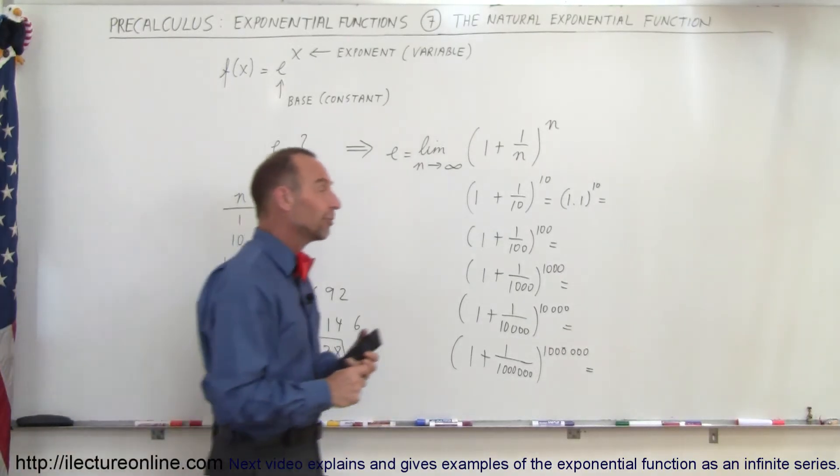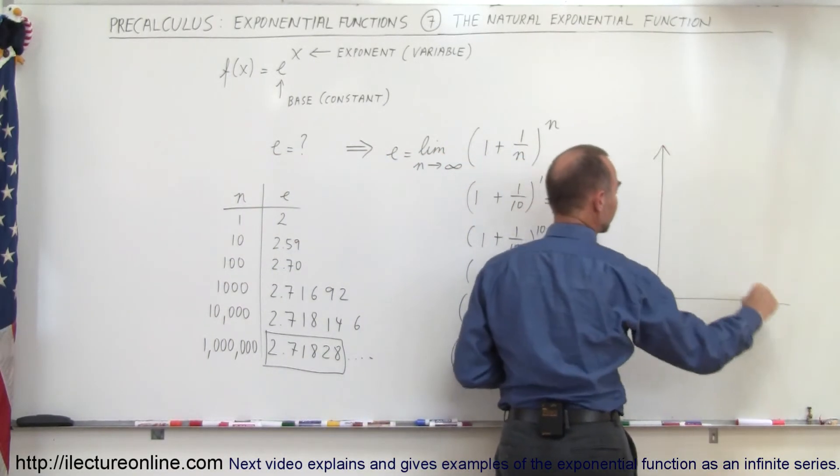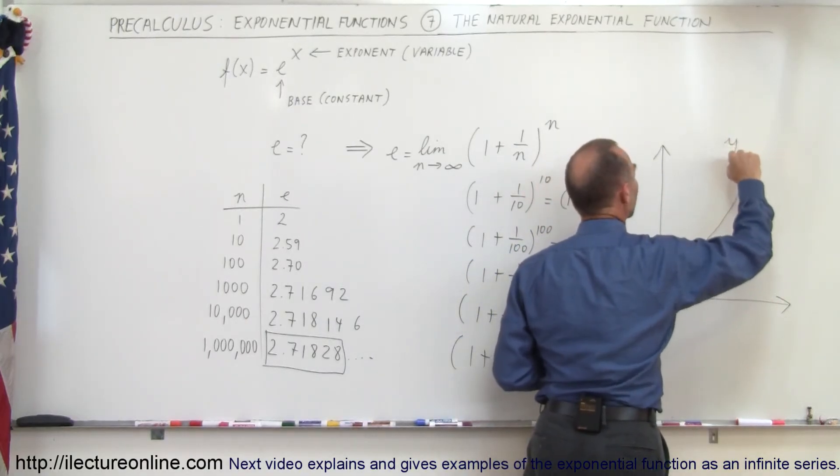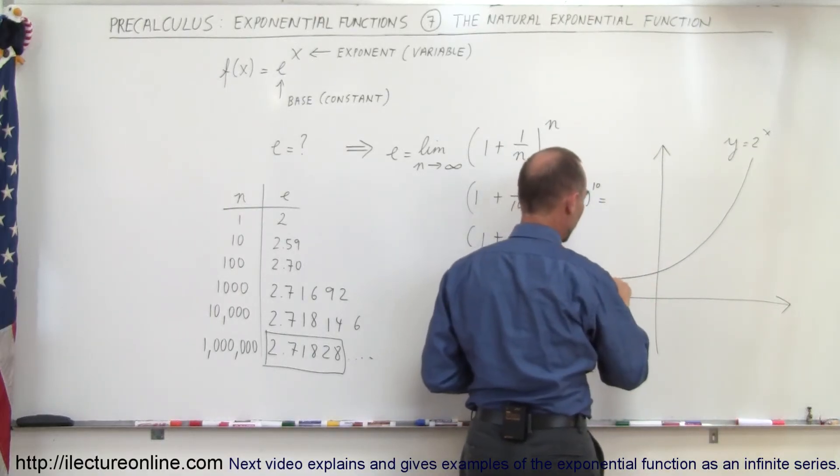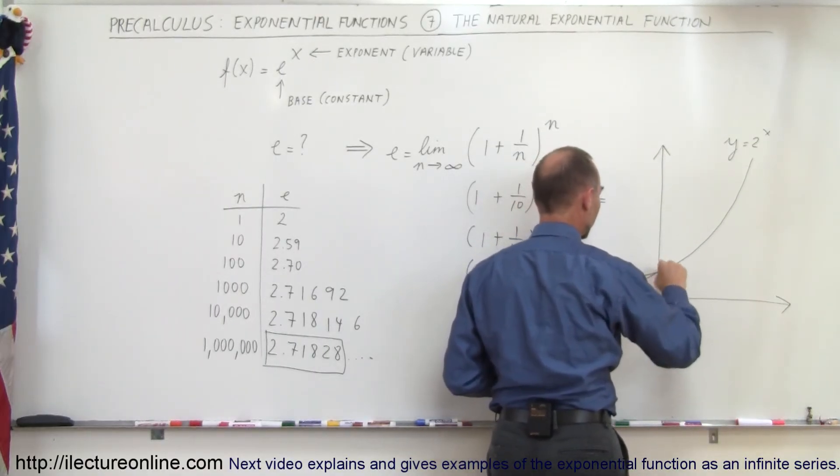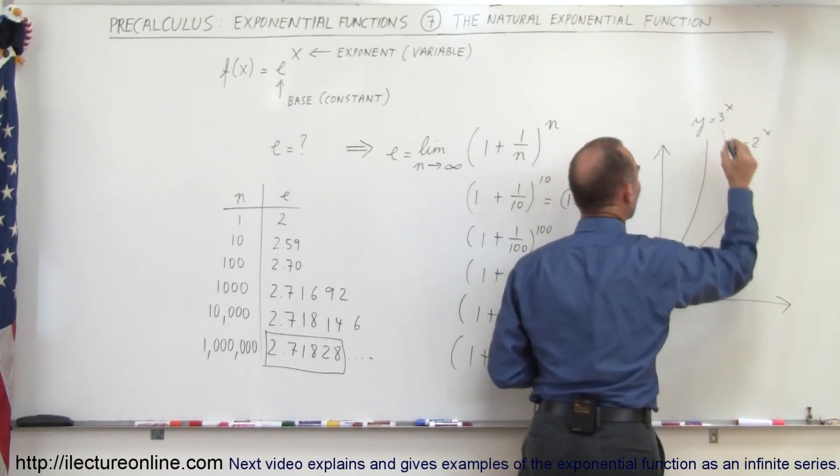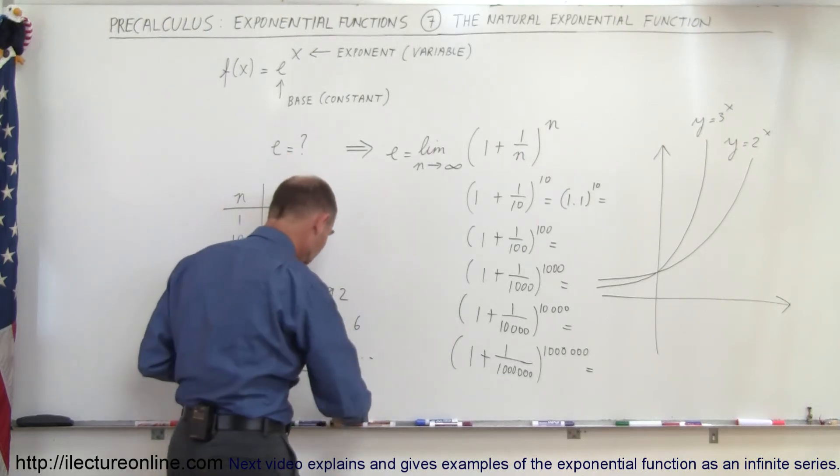Now we have a pretty good value of what the constant e is equal to. It is a constant, so when we graph that function, if we graph on the yx-axis, here we have the function y equals 2 to the x, and then we draw the function y equals 3 to the x.